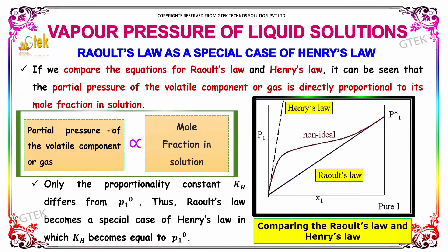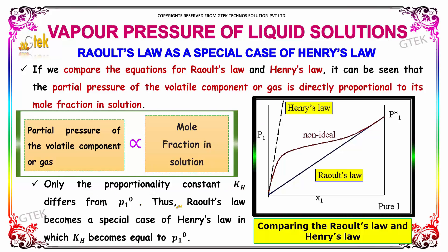If you compare the equation of Raoult's law and Henry's law, it can be seen that the partial pressure of the volatile component or gas is directly proportional to mole fraction in solution. Only the proportionality constant KH differs from PI0. Thus, Raoult's law becomes a special case of Henry's law in which KH becomes equal to PI0.